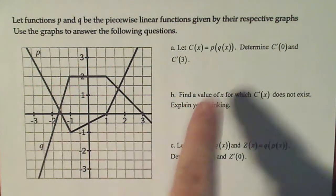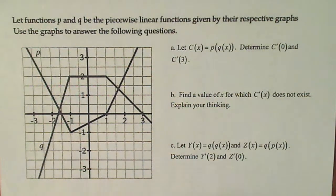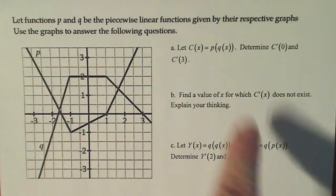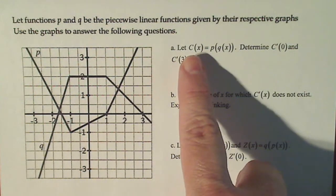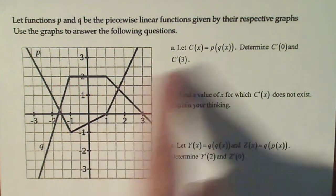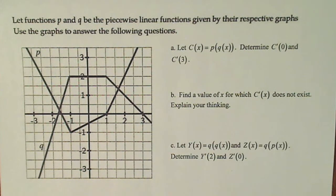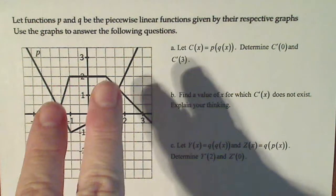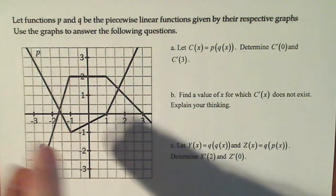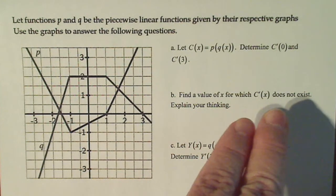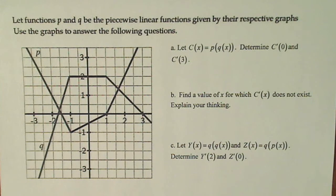We're going to answer these questions. When I do a problem like this, I don't just jump into the first question — I look at what they're doing overall. You can see that they're defining c as a composition of p and q. They want c prime, c prime of zero, and c prime of three. So I have to be thinking about what the derivatives of p and q are based on just this picture. Same thing here — find a value for which c prime does not exist, meaning is there a point on the x-axis where the composition's derivative won't exist?